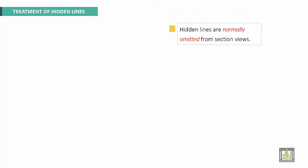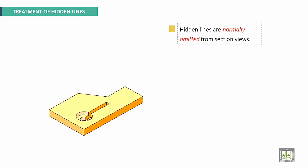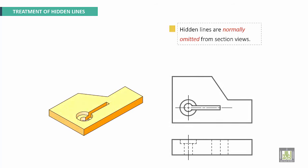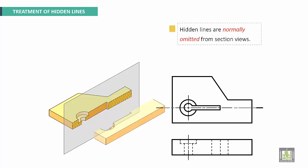Treatment of hidden lines: hidden lines are normally omitted from section views. Here we have an example with original views. If you make a section, we get dashed lines with hatching. So dashed lines should be removed from the sectional view.